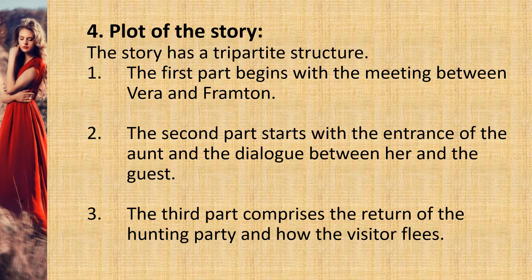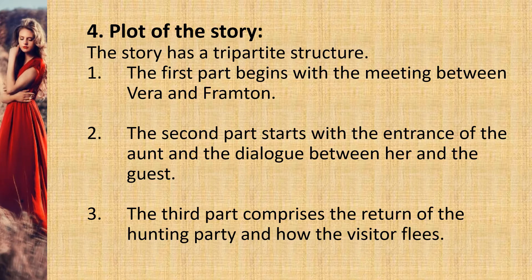The plot of the story has a tripartite structure. Number one, the first part begins with the meeting between Vera and Frampton. Number two, the second part starts with the entrance of the aunt and the dialogue between her and the guest. Number three, the third part comprises the return of the hunting party and how the visitor flees. The narrator employs flashback to divide these three parts, interrupting the present with a story within a story inspired by the girl's imagined past. The end is surprising when the reader discovers that Vera is a liar.